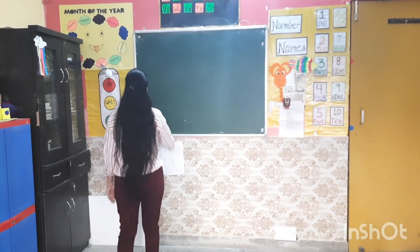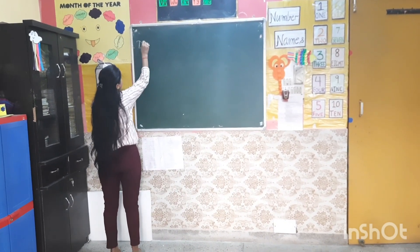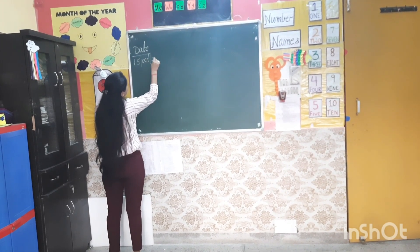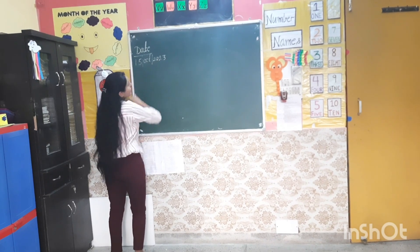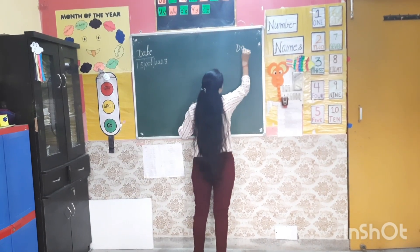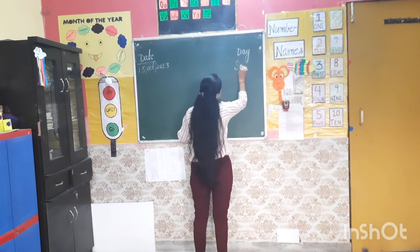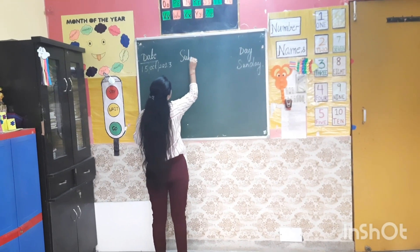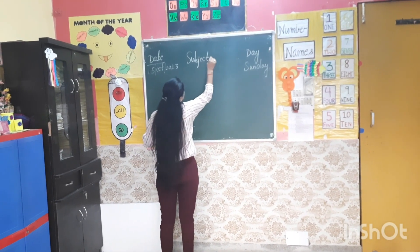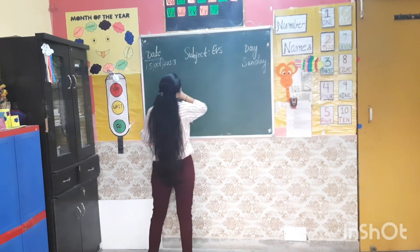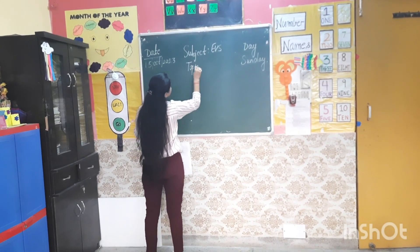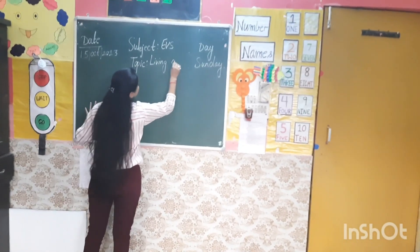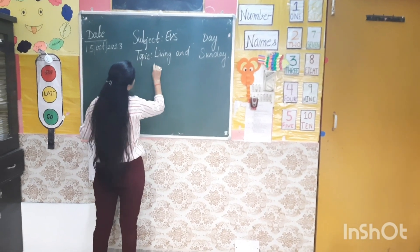Which day is today? Today is 15 October 2023. And which day is today? Today is Sunday. Your subject is idioms and the topic is living and non-living.